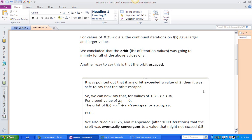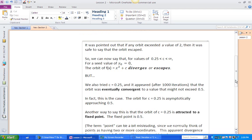Another way we're going to say this is that the orbit escaped. Okay, and we said, you know, if any orbit exceeds a value of two, then it's safe to say the orbit escaped. So now we're going to say that for our C between 0.25 and infinity, but not including 0.25, with a seed x0 value of zero, the orbit of x squared plus C diverges or it escapes.